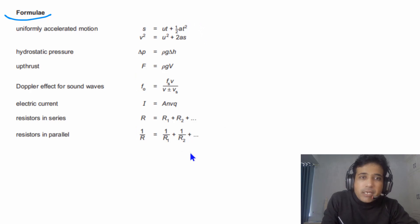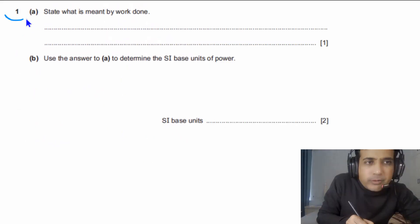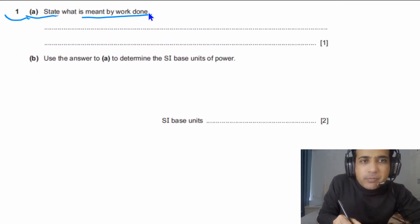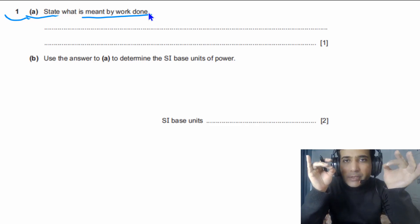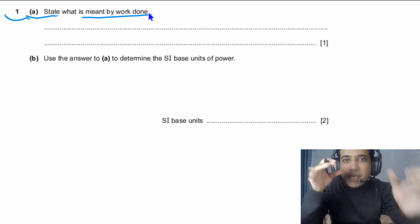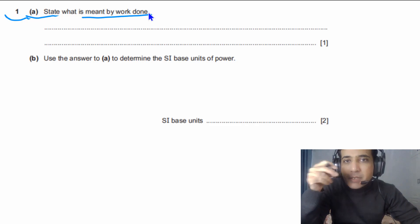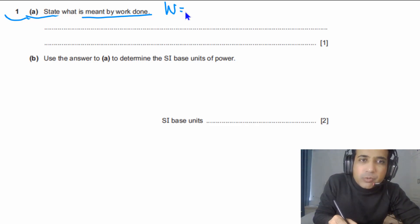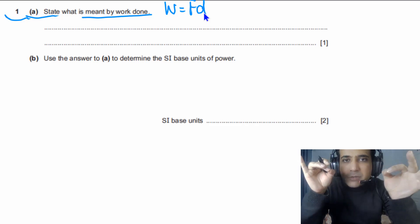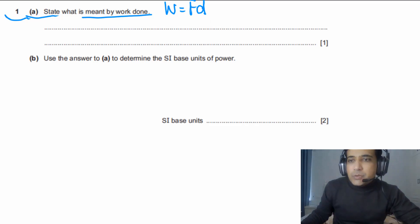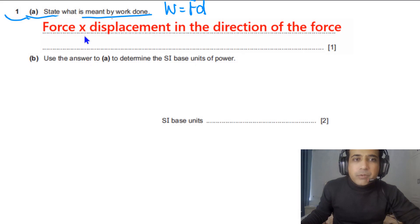For question number one, part A, we need to state what is meant by work done. Work done is simply equal to the product of force and displacement, where the displacement has to be in the direction of the force. So we can say W = Fd. Work done is the product of force and displacement in the direction of force — this is how you write down your answer.